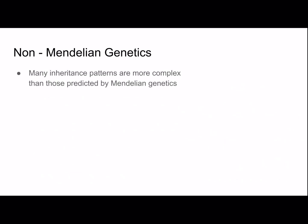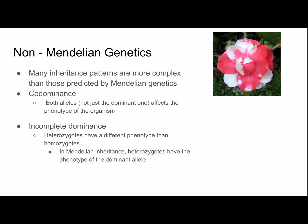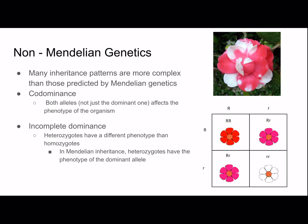Many inheritance patterns are more complex than those predicted by Mendelian genetics. There is something called codominance, where both alleles — not just the dominant one — affect the phenotype of the organism. Here's an example showing white petals and pink petals — it's not one or the other. Incomplete dominance is where heterozygotes have a different phenotype than the homozygotes. In Mendelian inheritance, heterozygotes have the phenotype of the dominant allele, but with incomplete dominance in flowers, the heterozygous individuals have pink petals, the homozygous dominant have red, and the homozygous recessive have white.